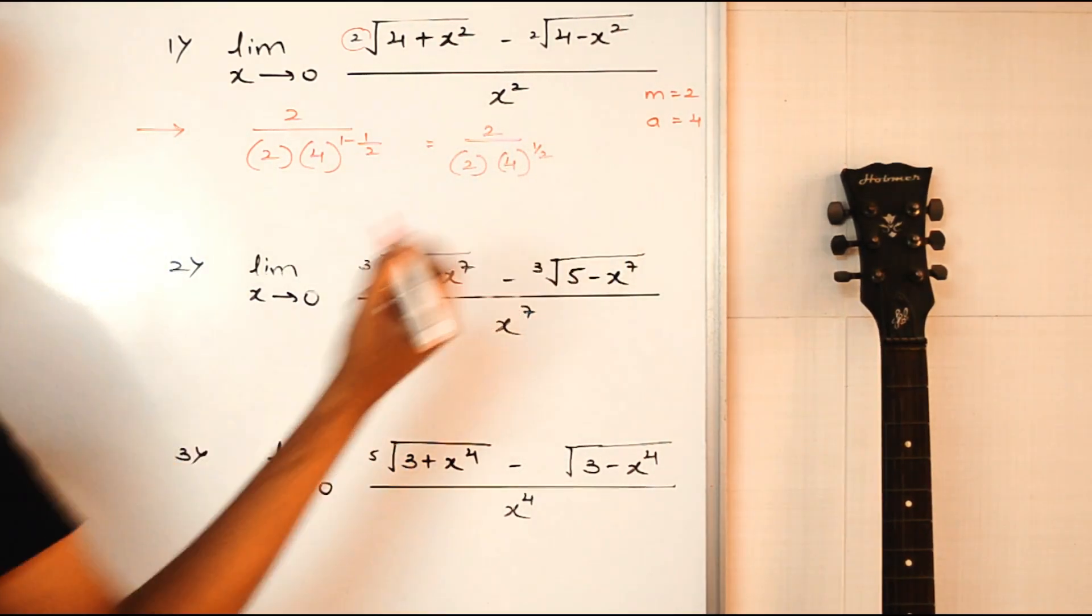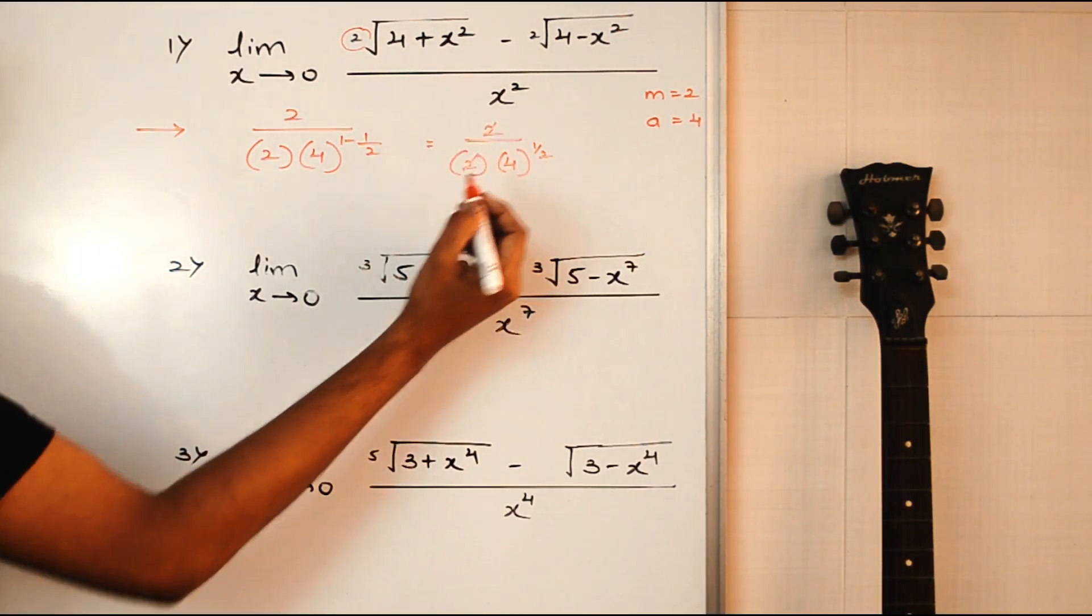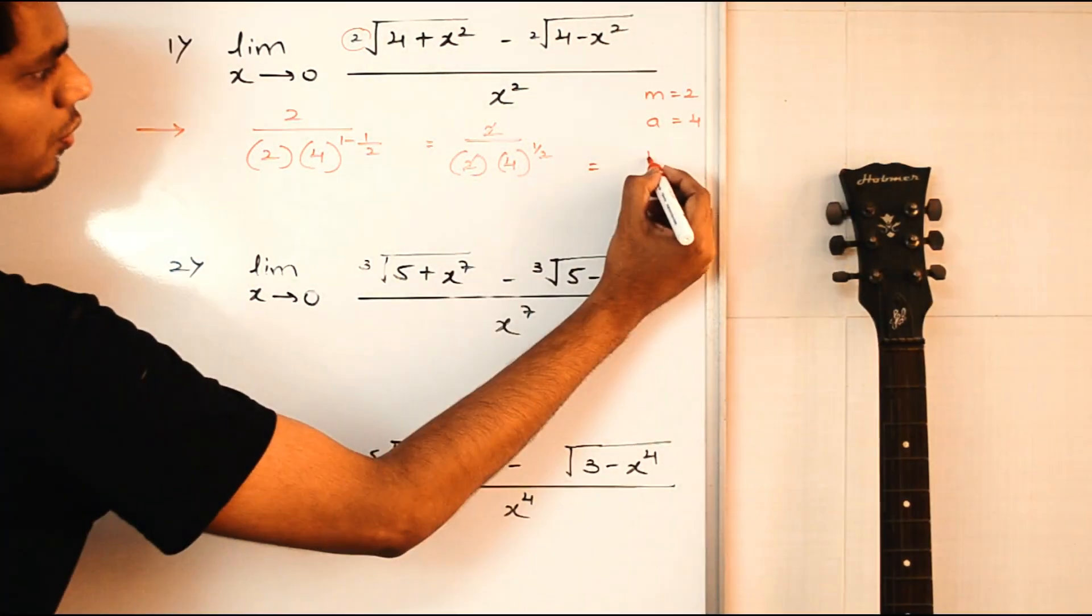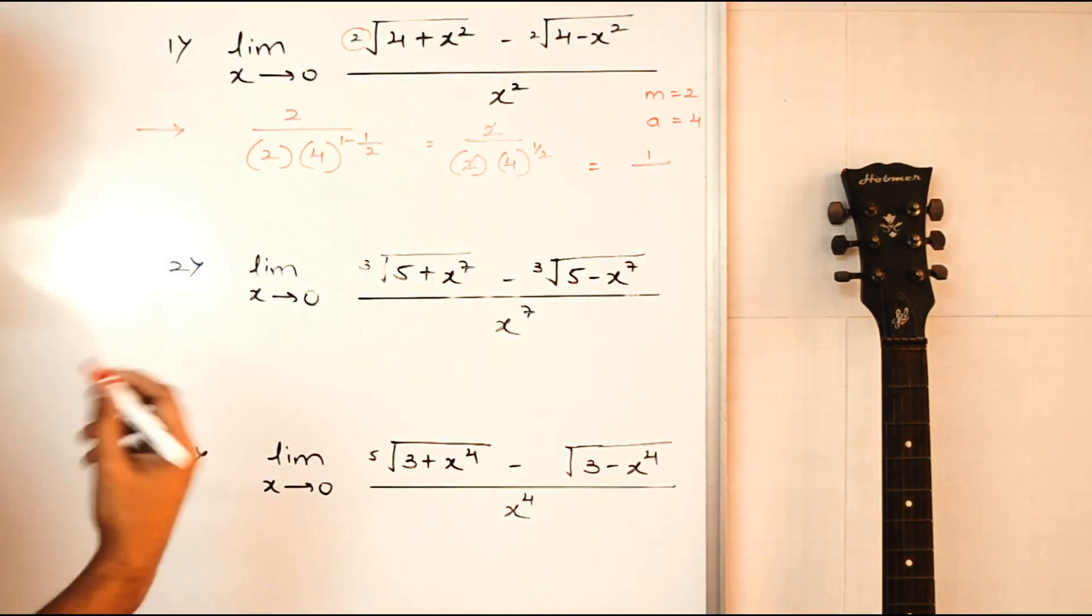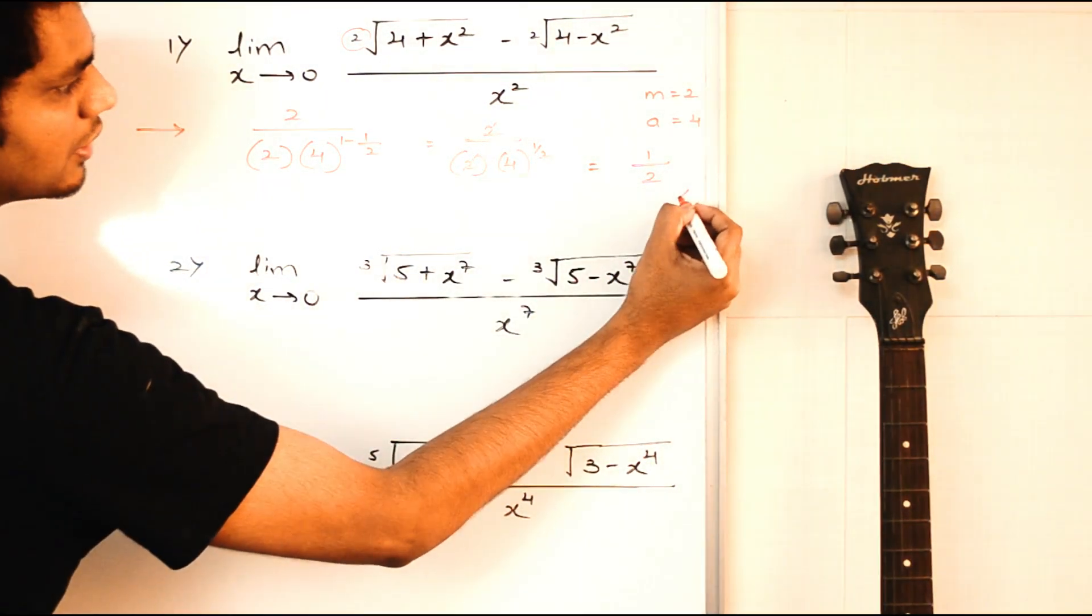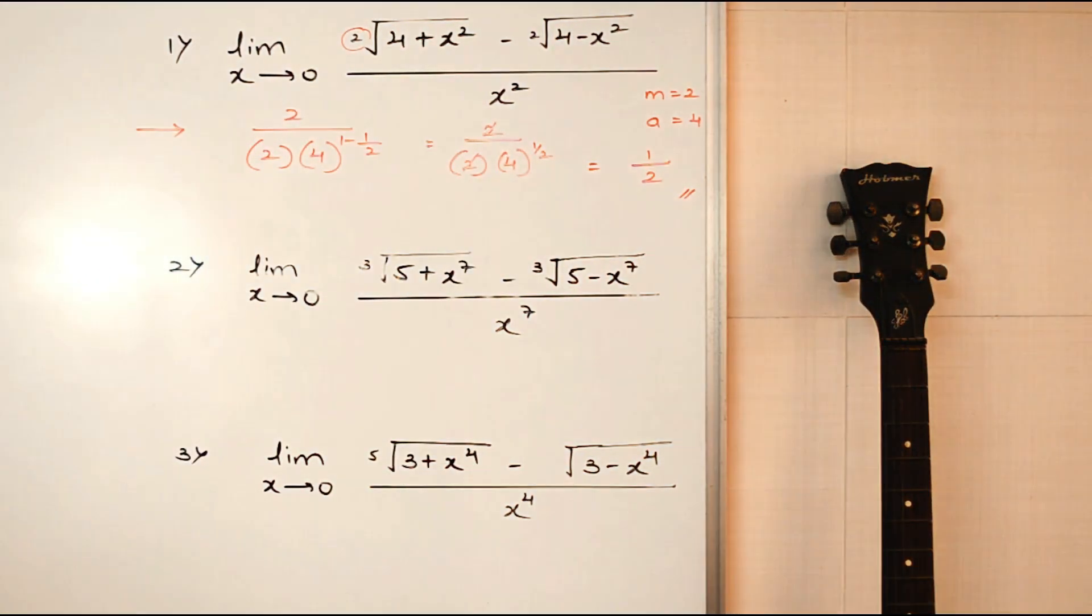So this will be 2 upon 2 into 4 raised to 1 minus half. 1 minus half is half. The 2s cancel. So this becomes 1 upon 4 raised to half. 4 raised to half is 2. So 1 by 2 is the final answer. Not even 5 seconds.